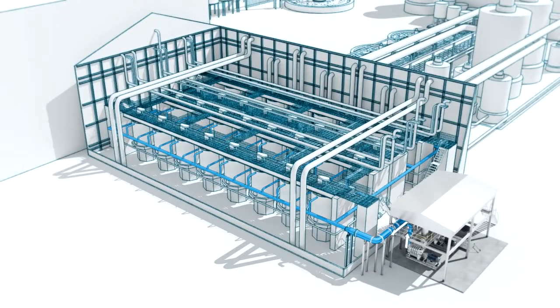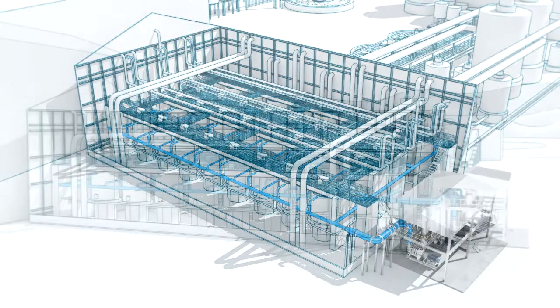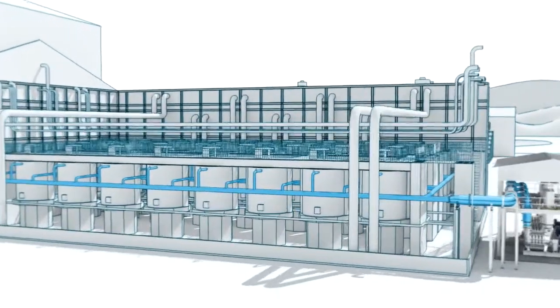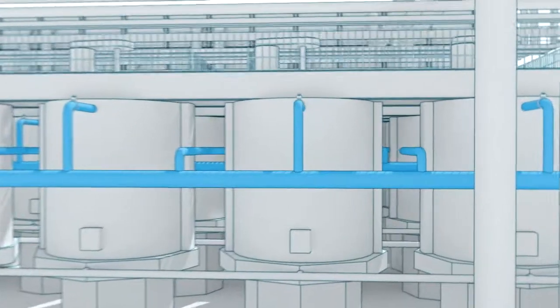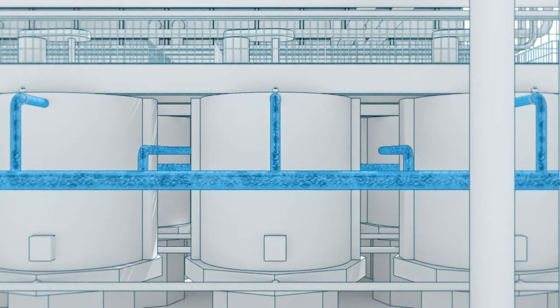Blowers' parallel operation through a manifold feeds each flotation cell with the required air volume and pressure. From this constant volume and pressure, each cell is fed according to its needs by a simple valve located at the entrance of each cell.